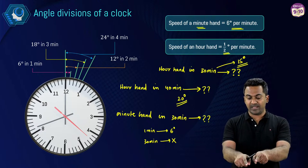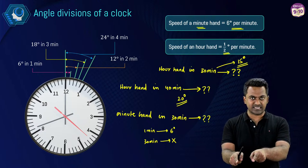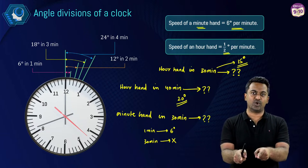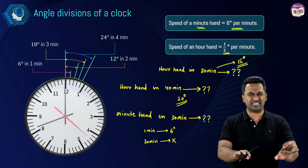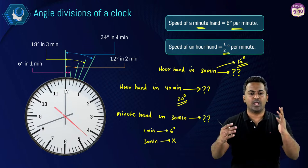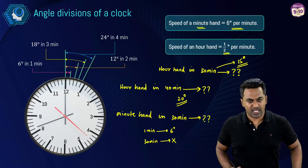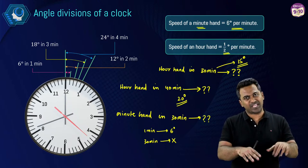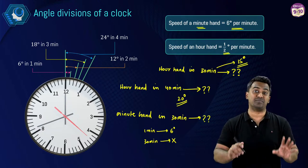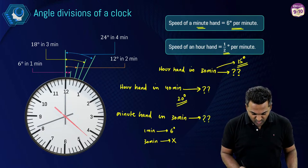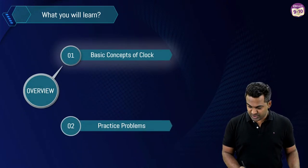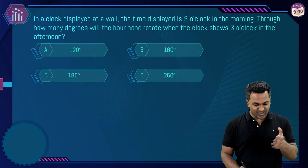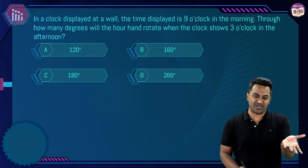These are all the fundamentals — that's it, nothing more to it. Now let's check out the practice questions. First question — I'll give you 30 seconds: a clock on a wall displays nine o'clock in the morning. How many degrees will the hour hand rotate when the clock shows three o'clock in the afternoon? Options: 120°, 160°, 180°, or 260°.